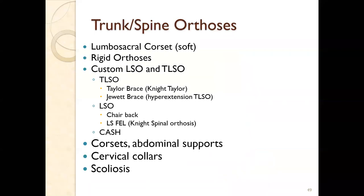For the trunk and spine, there are lumbosacral corsets, rigid orthoses, custom LSOs and TLSOs, corsets and abdominal supports, cervical collars, and scoliosis braces. Corsets are technically considered orthotics, and abdominal binders are essentially Velcro corsets. Any time we provide these spinal supports, the paraspinal muscles wearing them are weakening.